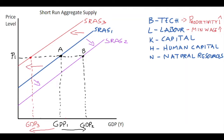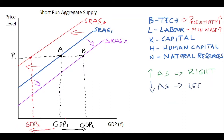In general, to summarize: anything that increases aggregate supply in the short run means we shift the aggregate supply curve to the right — a rightward shift. Anything that causes a decrease in aggregate supply is represented by shifting the aggregate supply curve to the left.